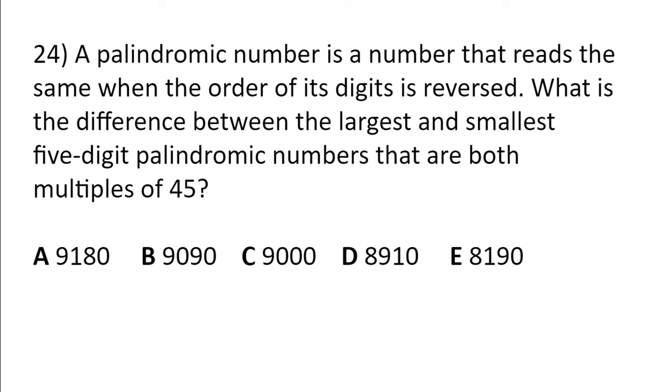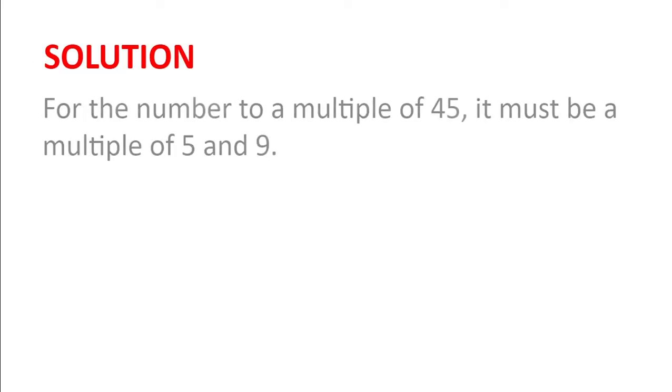A palindromic number is a number that reads the same when the order of its digits is reversed. What is the difference between the largest and smallest five digit palindromic numbers that are both multiples of 45? Well, for the number to be a multiple of 45, it must be a multiple of 5 and 9.